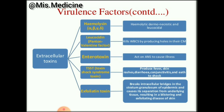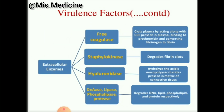Enterotoxin acts on the ANS to cause illness. Toxic shock syndrome toxin produces fever, skin rashes, diarrhea, conjunctivitis, and can lead to death by shock. Exfoliating toxin breaks intracellular bridges in the stratum granulosum of the epidermis, causing its separation from underlying tissue, resulting in blistering and exfoliating disease of the skin.